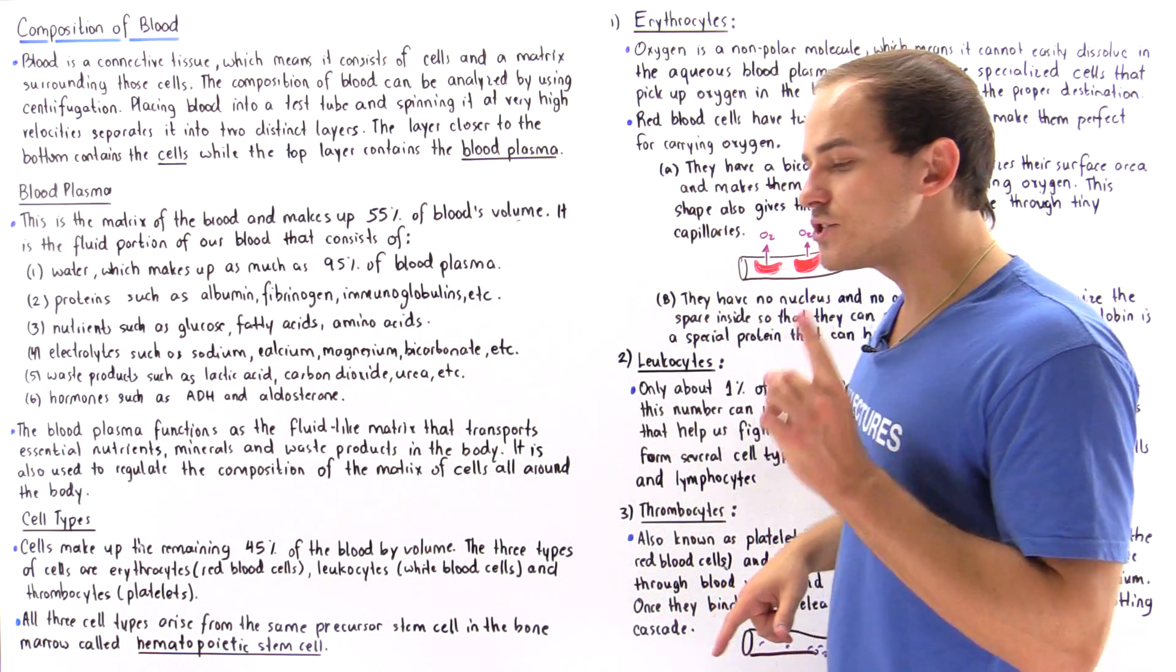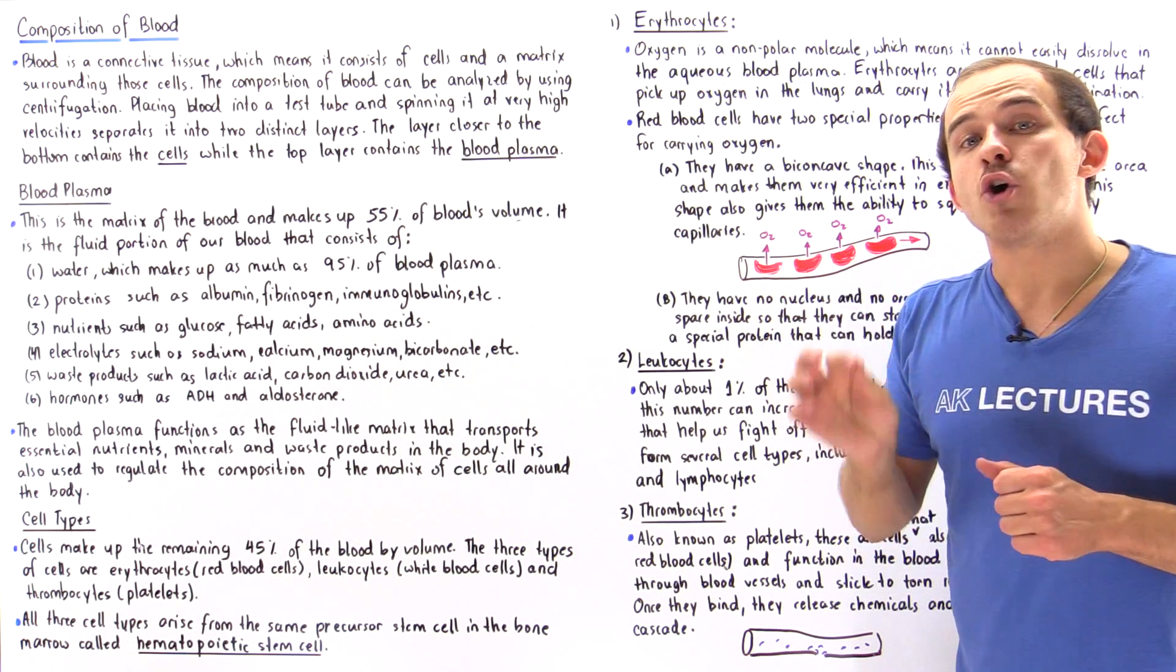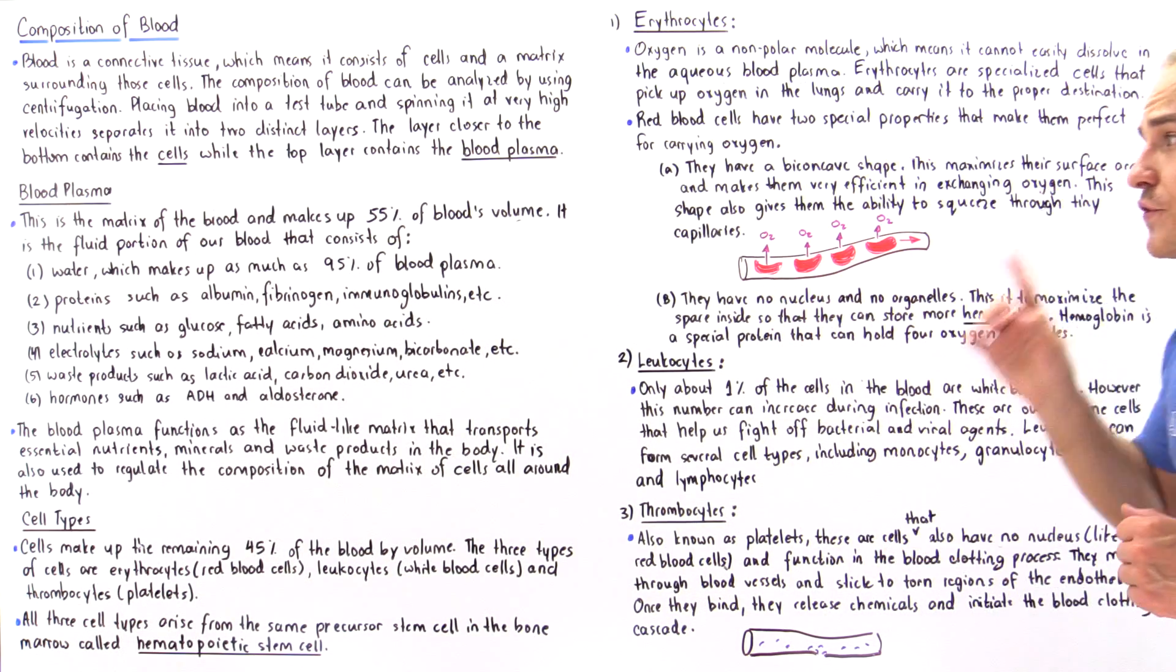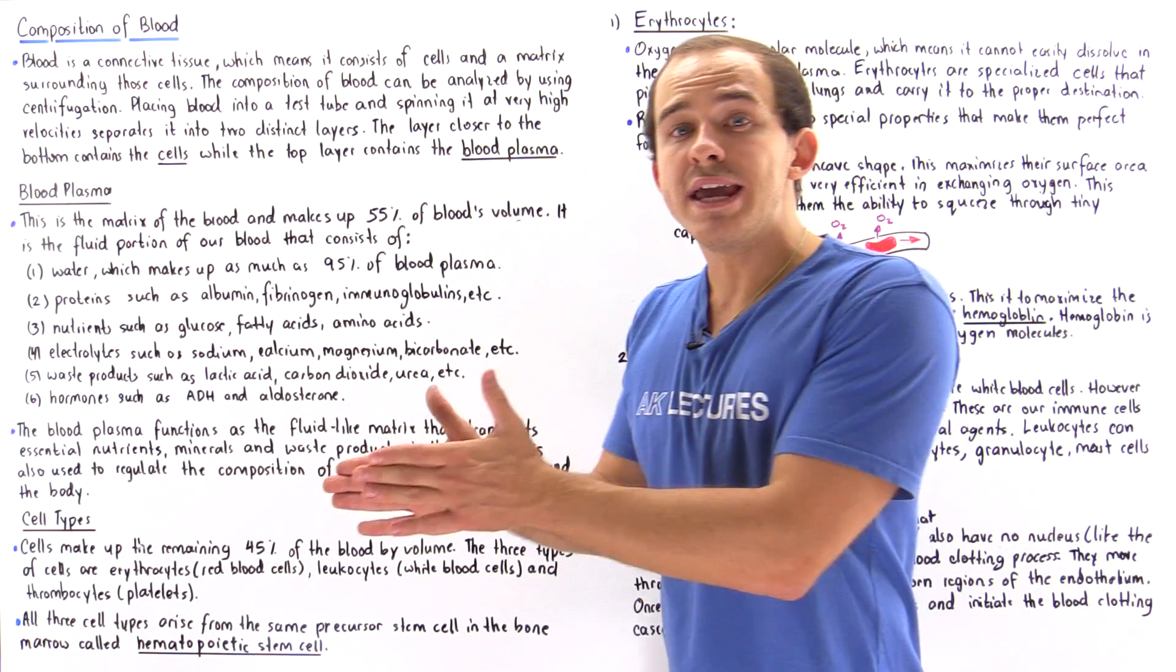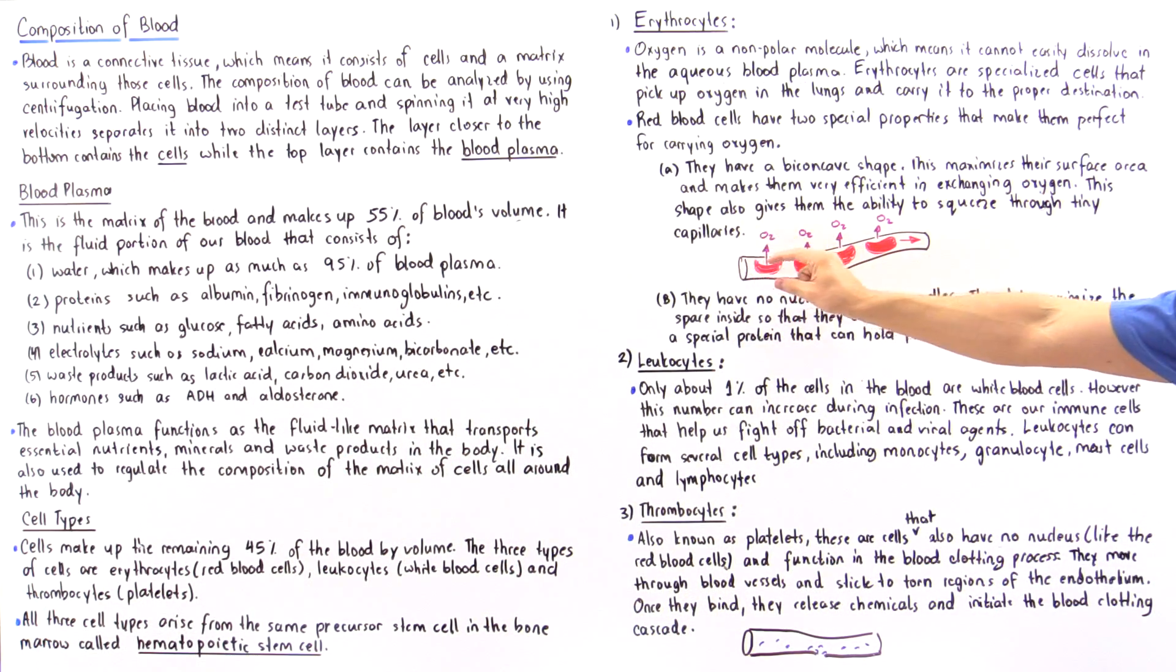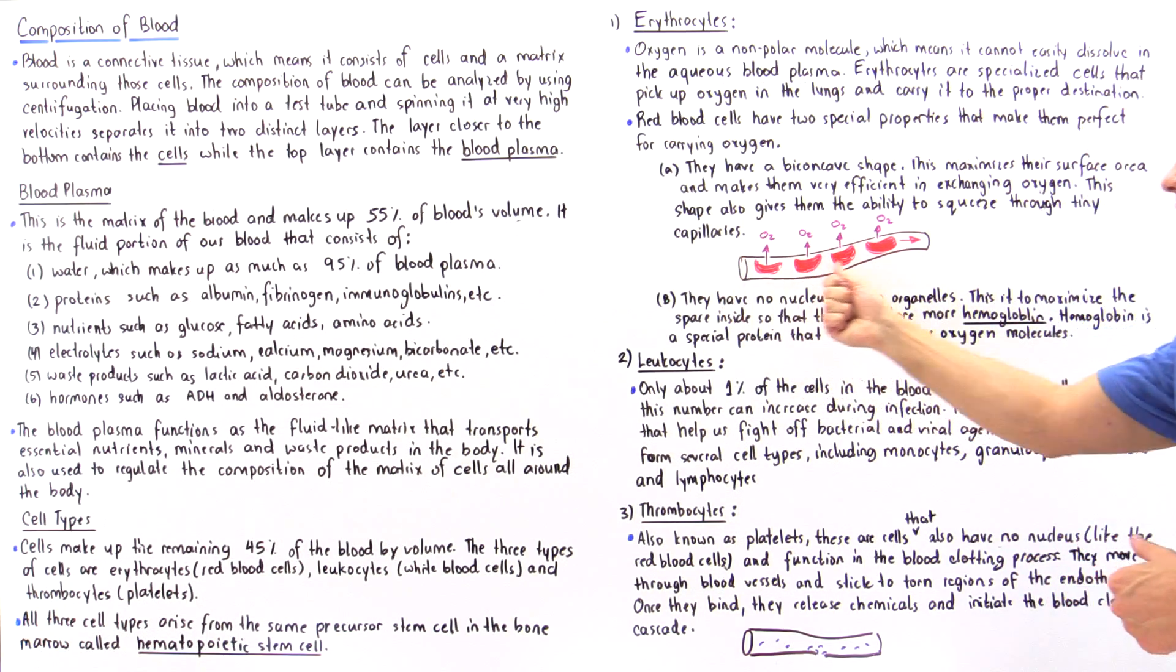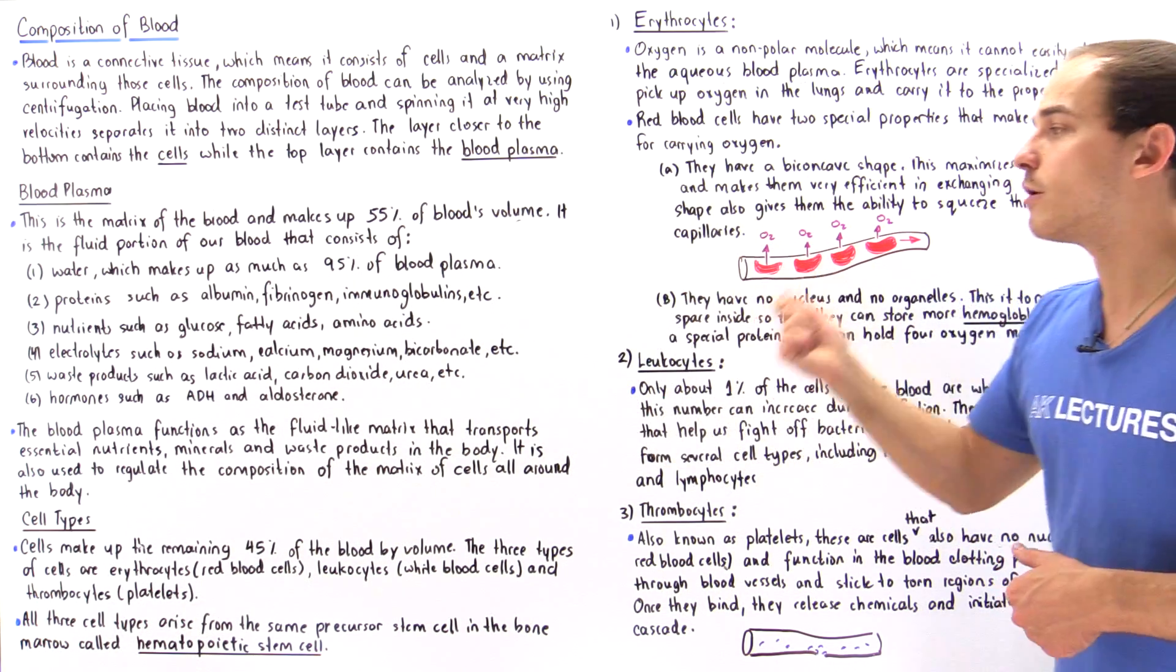Now red blood cells are actually very specialized. They have very interesting structures, very interesting properties that make them very efficient for carrying oxygen. So let's discuss what these properties are. Number one is their shape. They have a biconcave shape and that not only increases the surface area of the red blood cells and makes them very efficient in exchanging oxygen, but it also allows them to actually squeeze and travel through the really tiny capillaries.